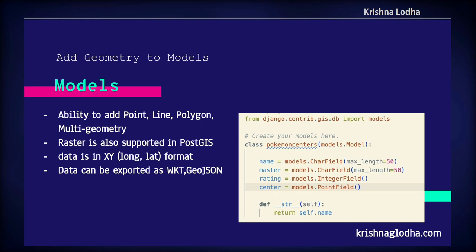When creating a model with a point field or polygon field, there are a few arguments we can pass such as SRID — we can define what SRID we want to work with. We can define the dimension, whether the data is 2D or 3D. We can also define whether we want that column as a geometry or a geography. If you want to work with geography, simply set geography=True, but keep in mind that geography will only work with latitude-longitude and not with any other coordinate systems.